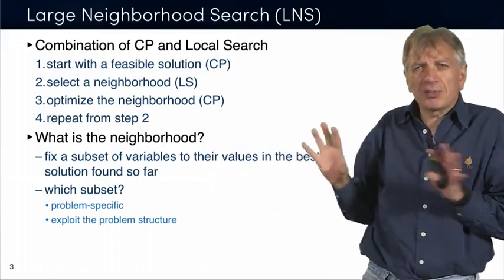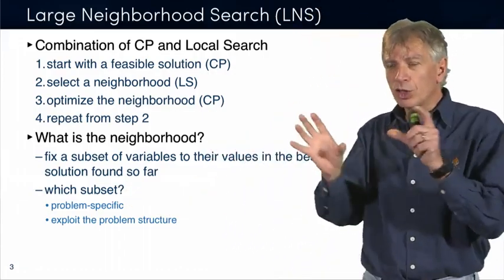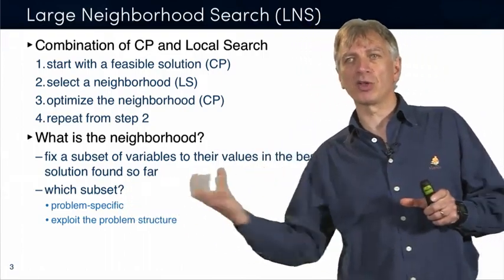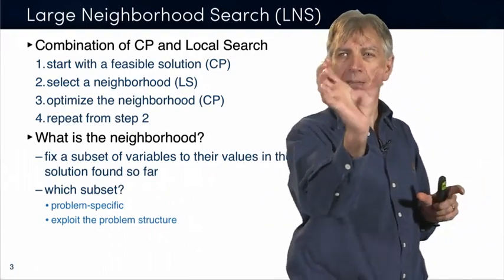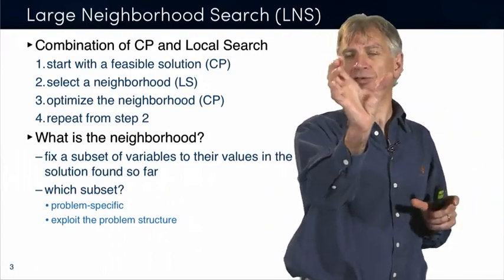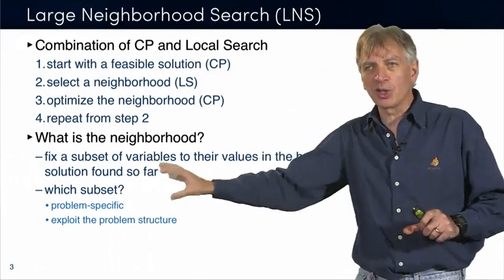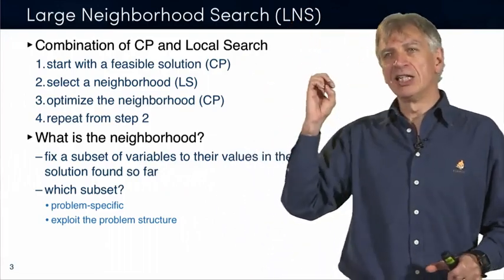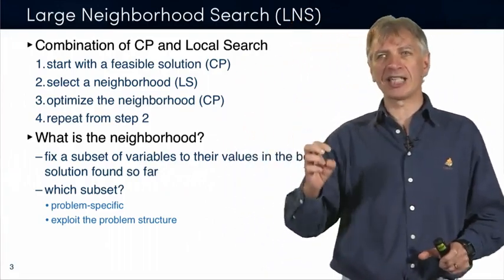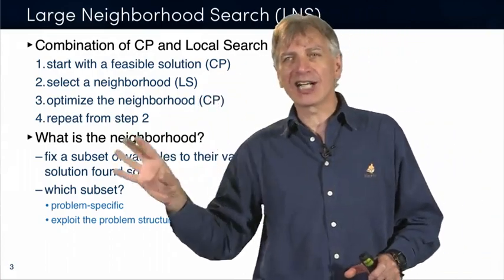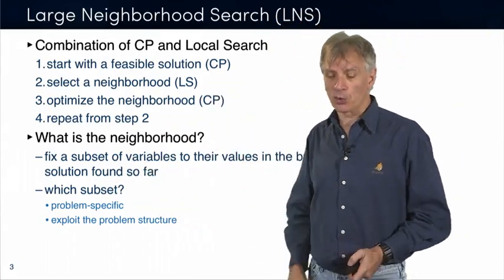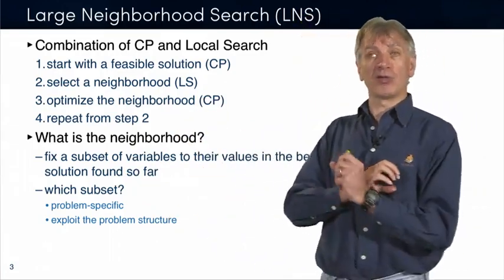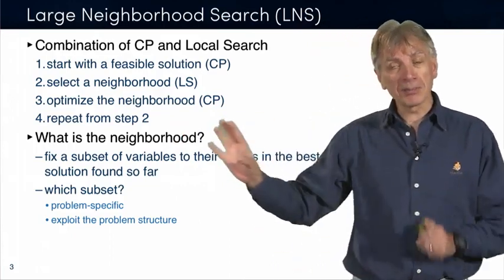Now, how do you choose a subset of variables? Typically, this is problem-specific. You will look at the structure and extract something from the structure of the problem that tells you, I want to keep that particular part fixed and re-explore the rest. I'll show you an example later on that are very intuitive. Typically, there are properties like spatial locations or temporal notions that are going to be very useful for finding these neighborhoods. So typically, exploit the problem structure, although in some particular case, you can have a completely random neighborhood that's going to behave very well. It really depends.